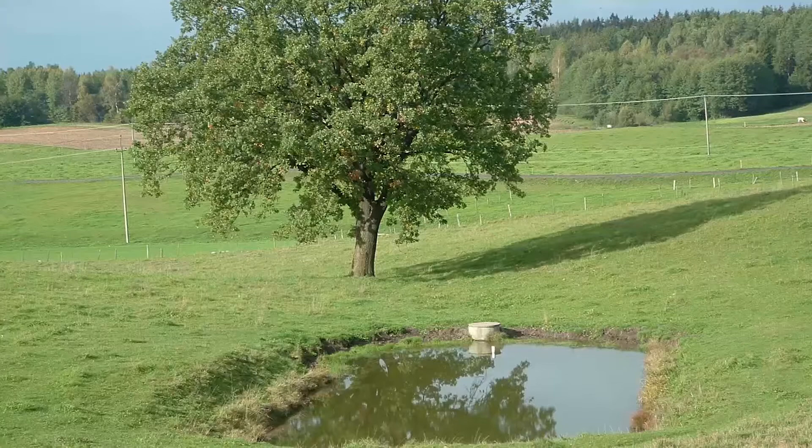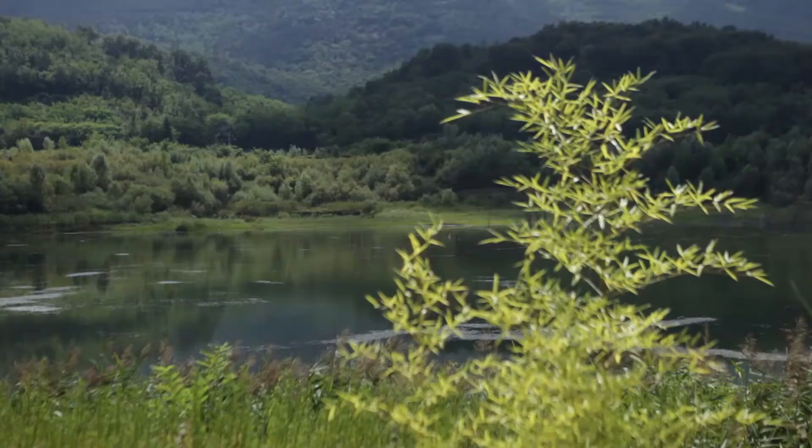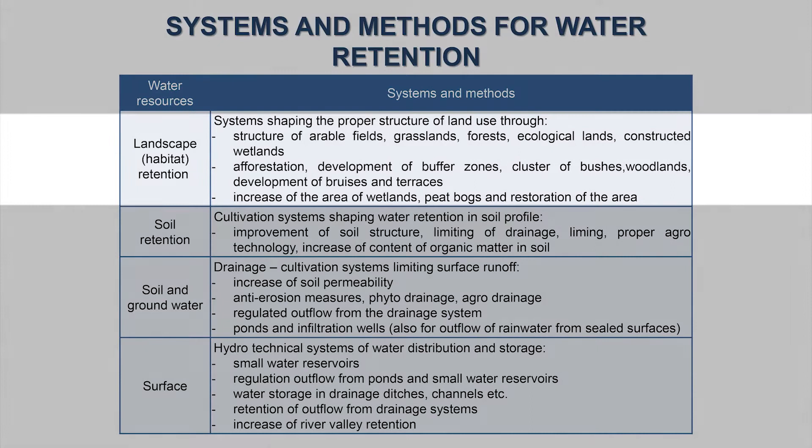We call it 'small' retention because, compared to very large investments people used to construct before — such as multi-functional water reservoirs, flood embankments, and canals — these measures are smaller in scale. We call it 'natural' retention because most of the measures simulate natural processes in river basins. Water can be stored above ground as surface water, groundwater, and soil water. Using small retention methods, we can slow down surface flow, increase the recharge of aquifers, and increase the volume of water in the unsaturated zone of soil.